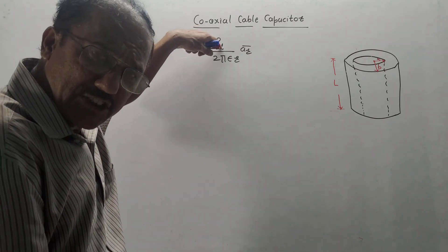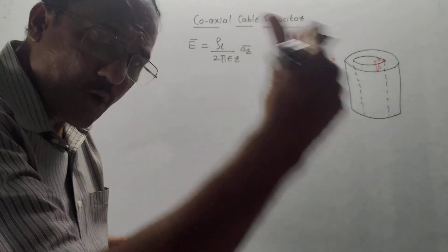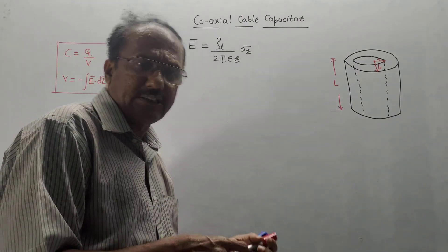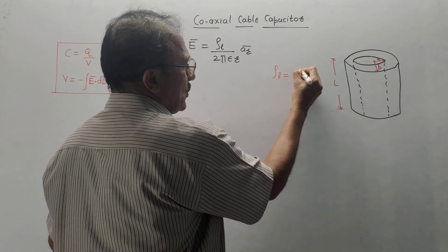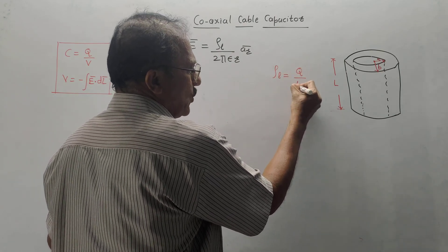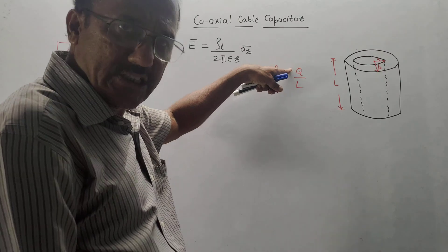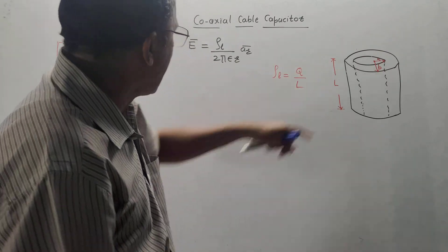So, at the beginning itself, express rho L in terms of Q. Rho L is line charge density, defined as total charge upon total length. Total charge is Q, total length is L as shown in this diagram.